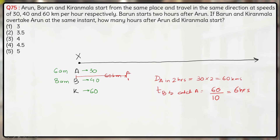Barun catches Arun after 6 hours from when he starts. So if he starts at 8 a.m., then Barun and Arun will meet 6 hours after 8 a.m., that is at 2 p.m.